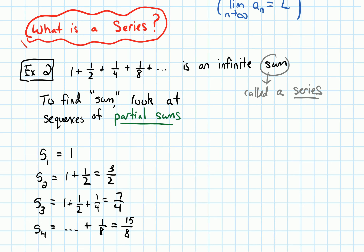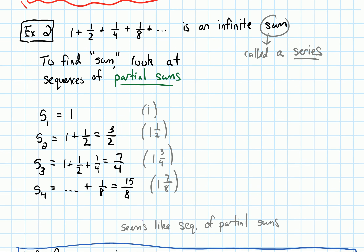So what we need to do is figure out: do the terms in this sequence of partial sums have a limit? Do they converge to some finite number? The first number was just one. The second number, three-halves, is easier to read as a mixed fraction: one and a half. The next number is one and three-quarters. The next is one and seven-eighths. So it looks like these numbers are getting bigger and bigger, but this fractional part is getting closer and closer to one. Overall, we're getting something really close to two. So it seems like our sequence of partial sums is converging to two.